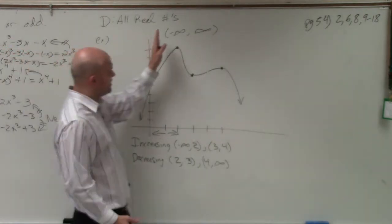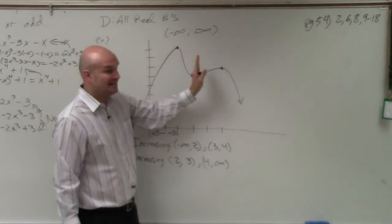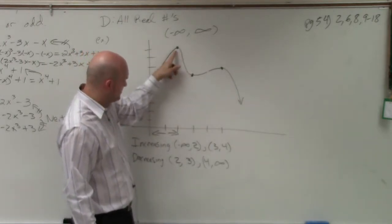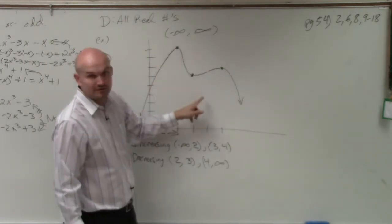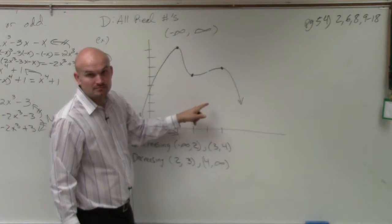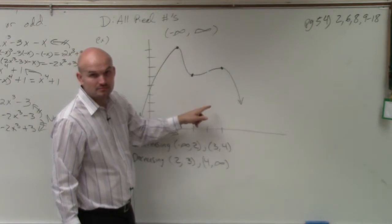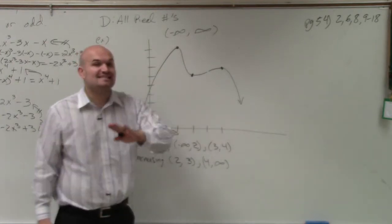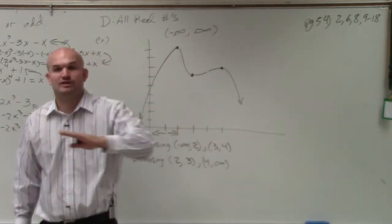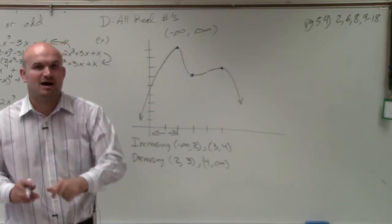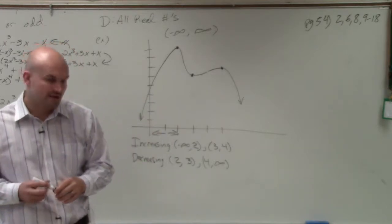The graph, from left to right, is decreasing between the x values of 2 and 3. Yeah, you're just talking about the x intervals of when the graph is going up or down. We're not concerned about the y values.